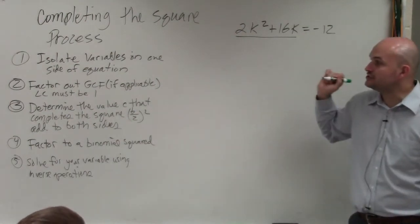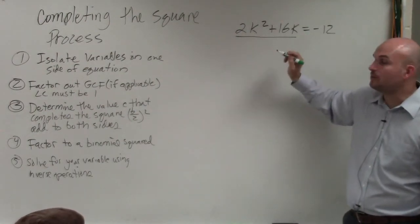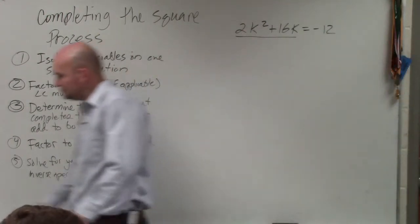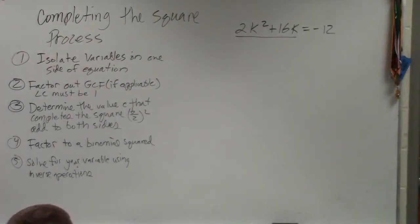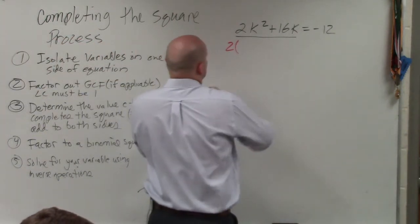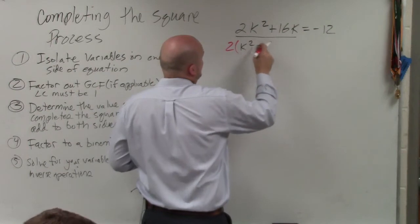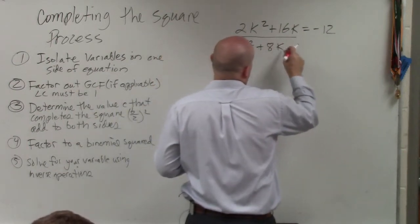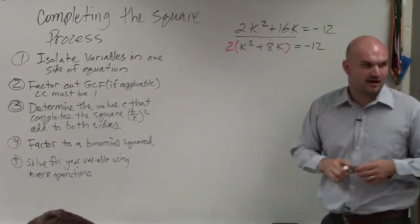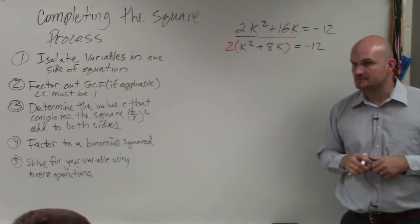Step number two, factor out the GCF. The LC must be 1. You guys can see the LC right here is 2. I have to factor that out. So I'm going to factor out a 2. When factoring out a 2, I'm left with k squared plus 8k equals negative 12. Does everybody follow me? Yes? OK.